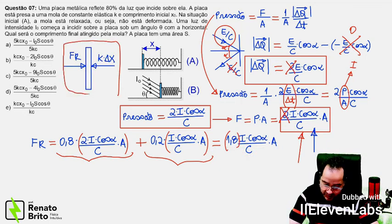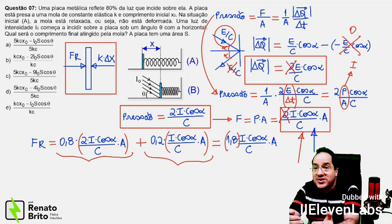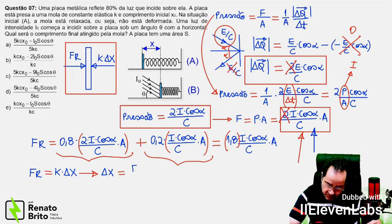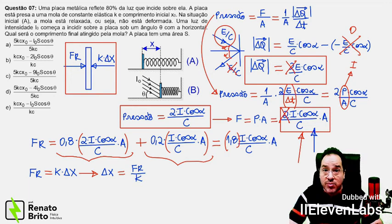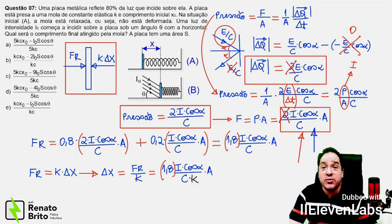And therefore, in the final equilibrium situation, the force due to radiation will have to match the elastic force acting on this plate. So let's write this equilibrium equation. So here I will find the expression for the spring's deformation. Just take that force expression and divide it by the spring constant, k.